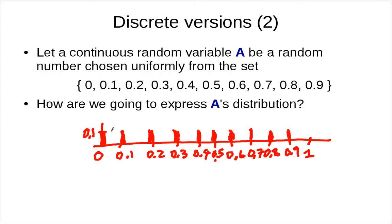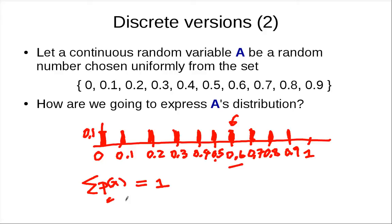As we make more choices, the probability of picking one specific number decreases. But this is still a probability distribution because if you sum all the PMF values up, you get 1. This PMF — probability mass function — can be thought of as a point mass at various positions, and the total mass sums to 1.